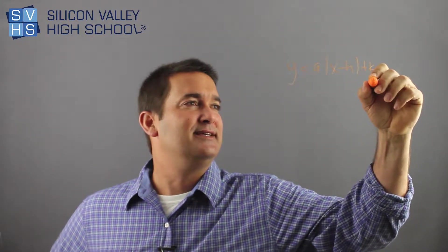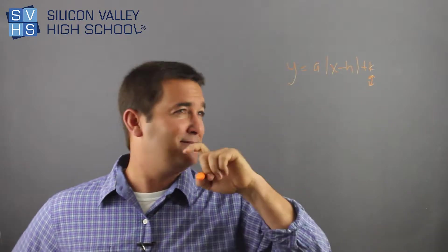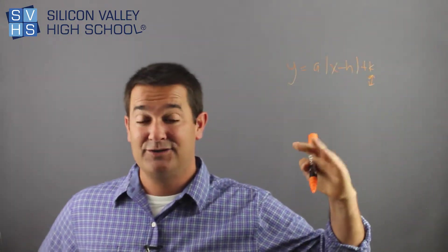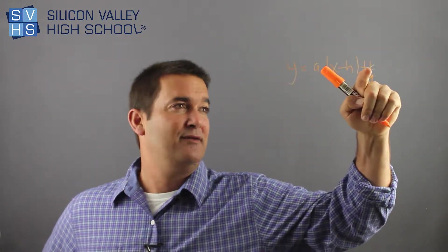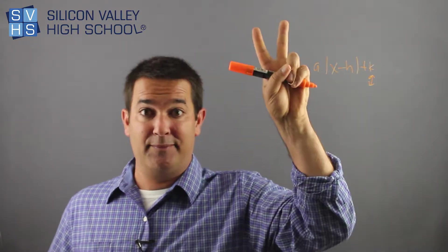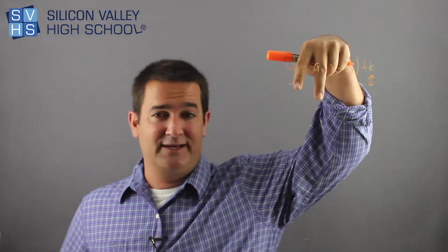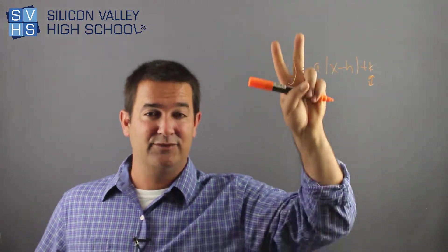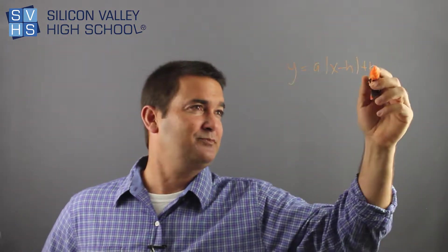K is the easiest. Anytime you add a number outside of the absolute values, it changes it vertically. If this was a plus 3, the V would go up 3. If this was a minus 3, the V would go down 3. It would just shift that V up and down. So that's vertical.